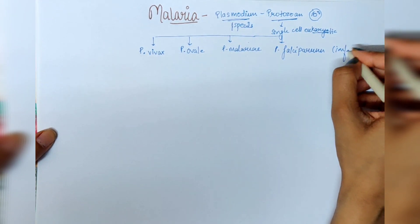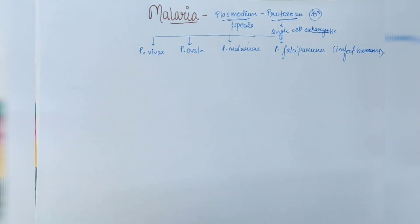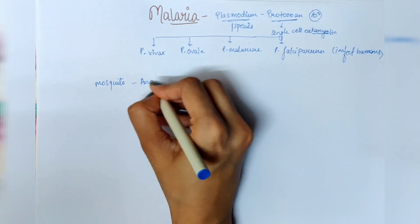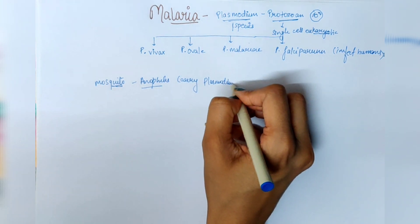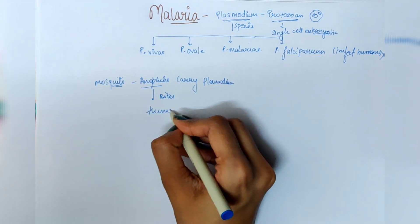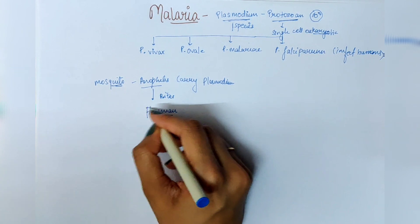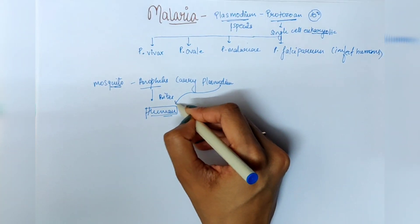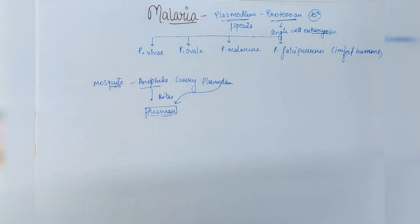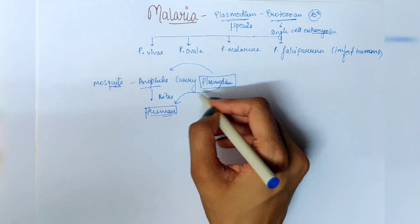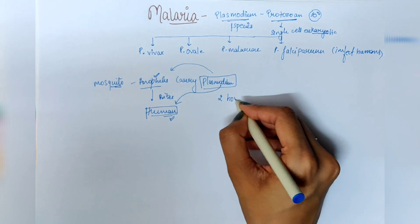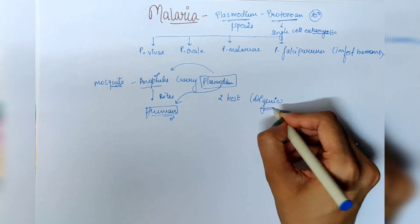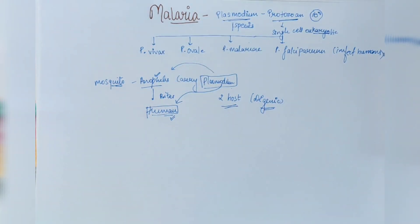All these species infect humans and cause malaria. Plasmodium is carried by a mosquito known as Anopheles. Anopheles is the mosquito which carries plasmodium. When Anopheles bites a human, this plasmodium is transmitted into humans. So plasmodium needs two organisms to complete its life cycle — one is Anopheles and the second is humans. It is dependent on two hosts, meaning it is digenean. Digenean means it needs two hosts to complete its life cycle.